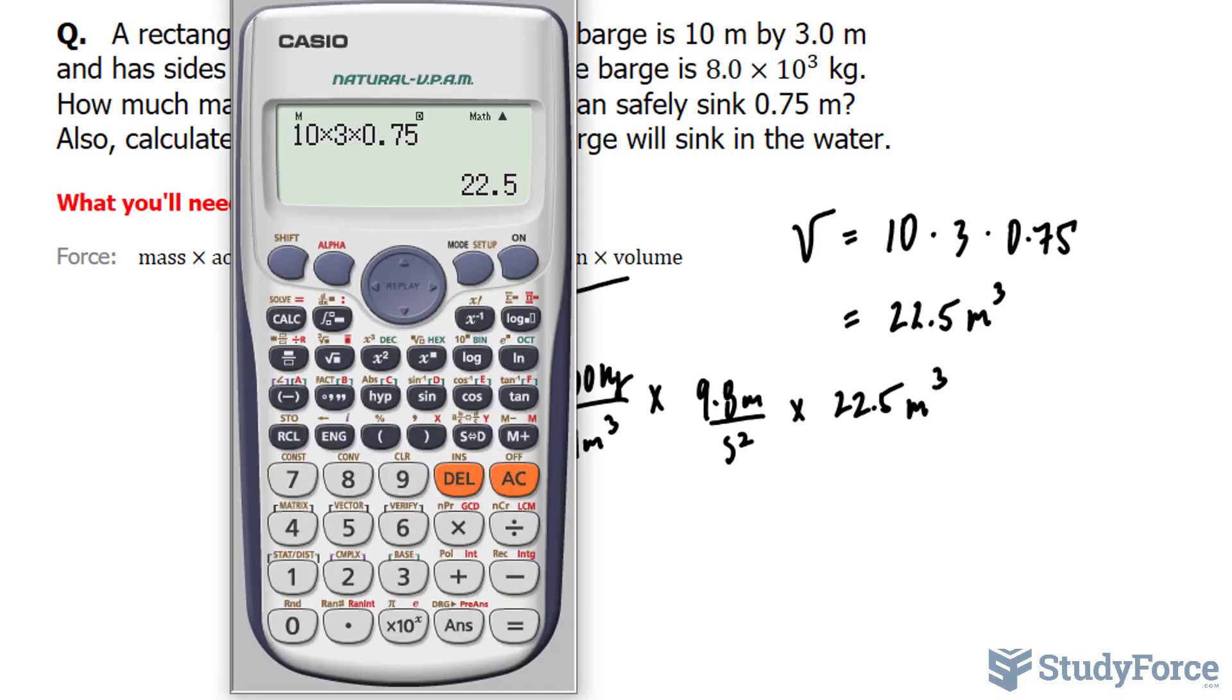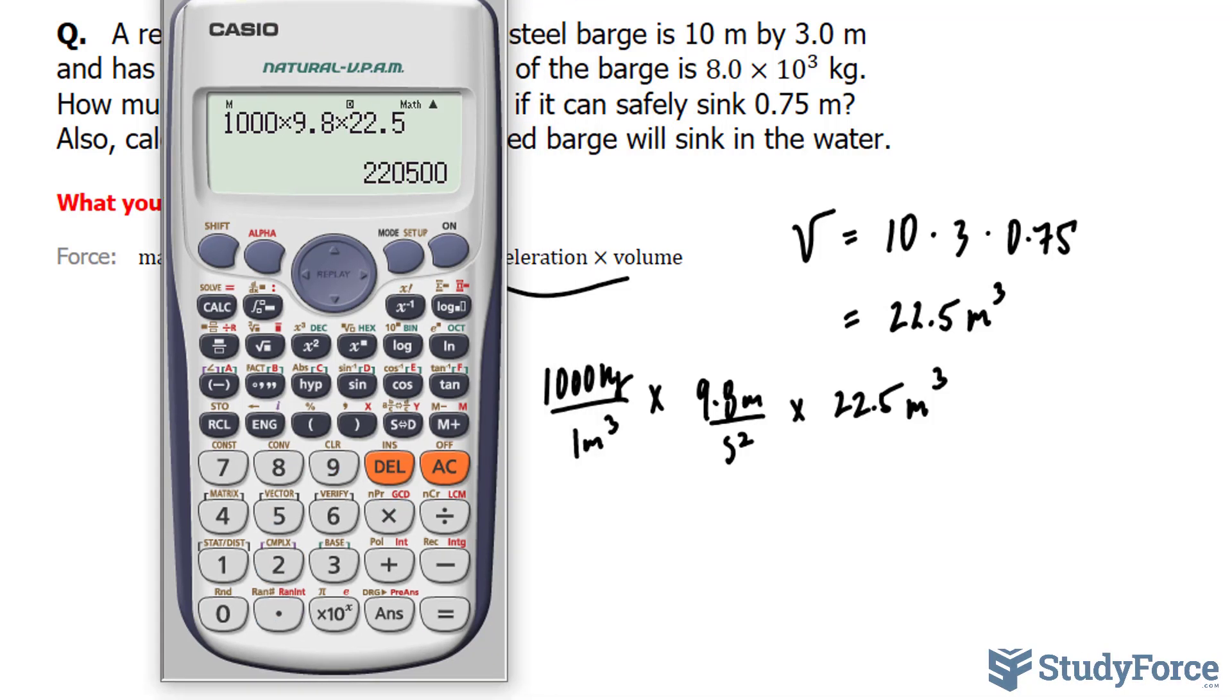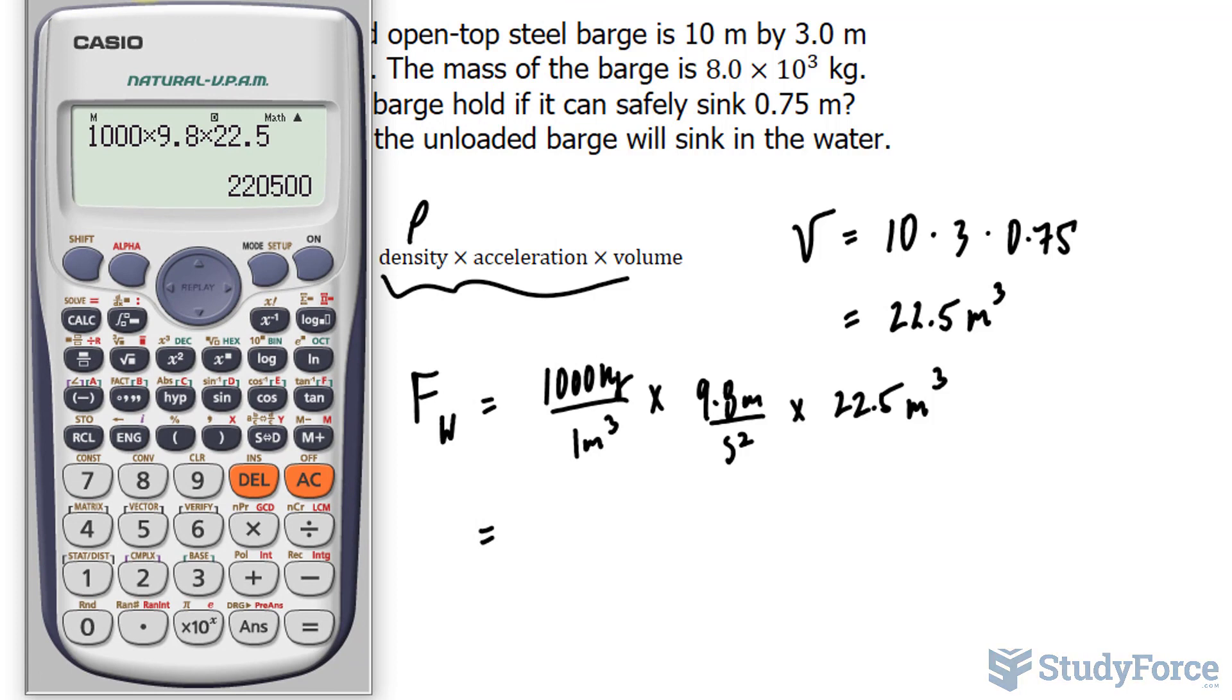So multiplying all this out, 1,000 times 9.8 times 22.5, gets us the following in newtons, and we need this to three significant figures.